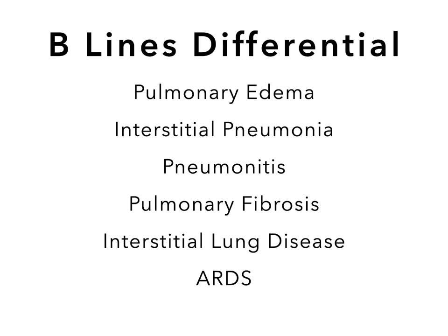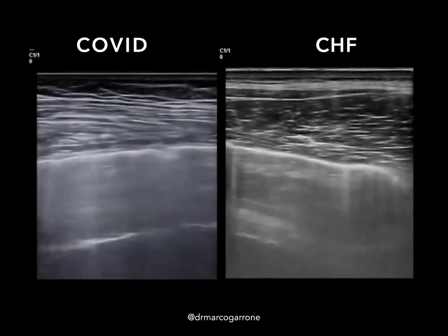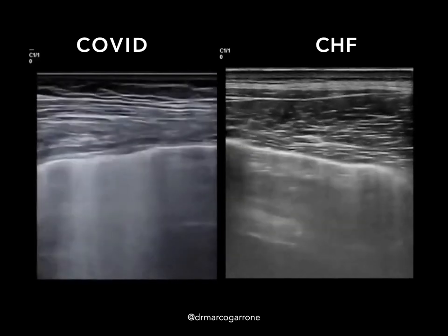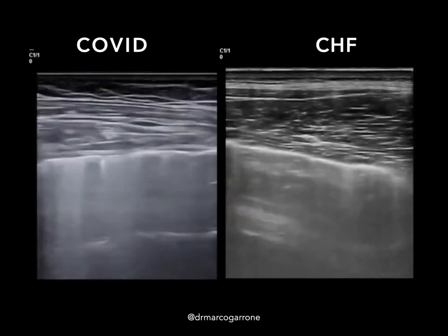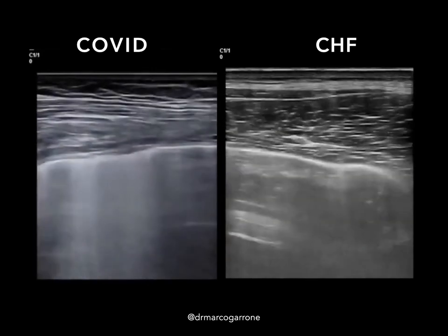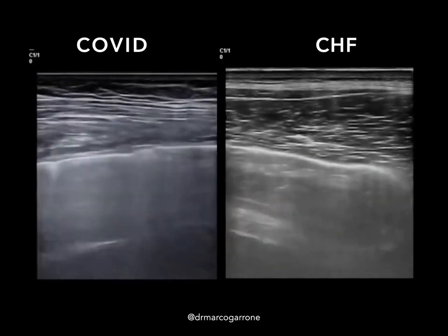Remember that B lines are an artifact representing thickening of the interlobular septa, so B lines have a differential that includes pulmonary edema, pneumonitis, pulmonary fibrosis, interstitial lung disease, and ARDS. One clue to help distinguish COVID versus pulmonary edema is to look carefully at the pleural line. This example from Italian physician Marco Garone shows the clip on the left with an irregular pleural line in a patient with COVID, while the clip on the right has a nice smooth pleural line in a patient with CHF.